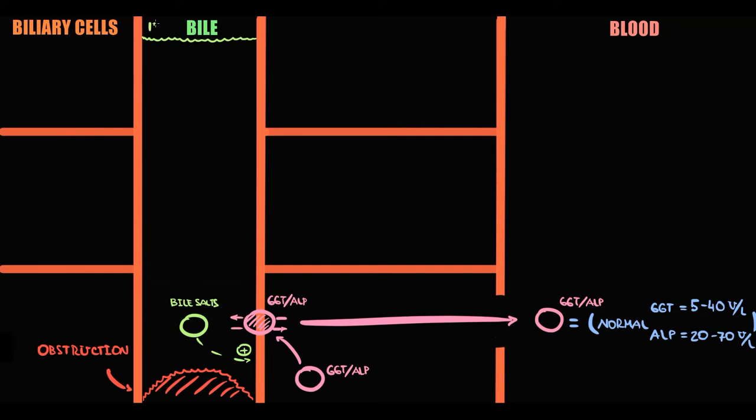So now it will be not 50 milliliters of bile in the biliary tract. With cholestasis it will be 150. The more bile accumulates, the higher the amount of bile salts in the biliary tract. With increasing amount of bile salts, the stimulation of the biliary cells increases.